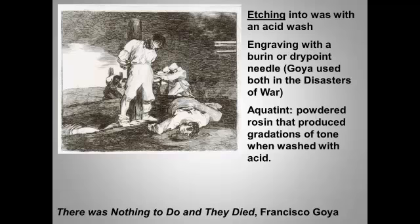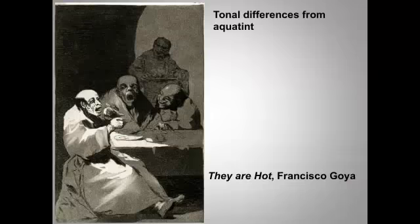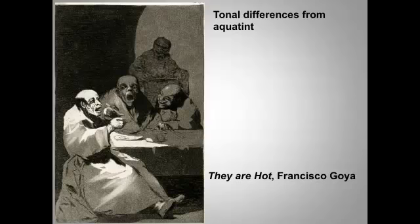Aquatint was an innovation because before, artists could only create fields of value — light and dark tone — by making hatched lines. Aquatint added the element of tone to prints; variations in tone are created by varying how long different parts of the plate are exposed to the acid. It's called aquatint since the effect is a little bit like watercolor. An example from Goya's earlier series illustrates the gradations of tone that aquatint makes possible.